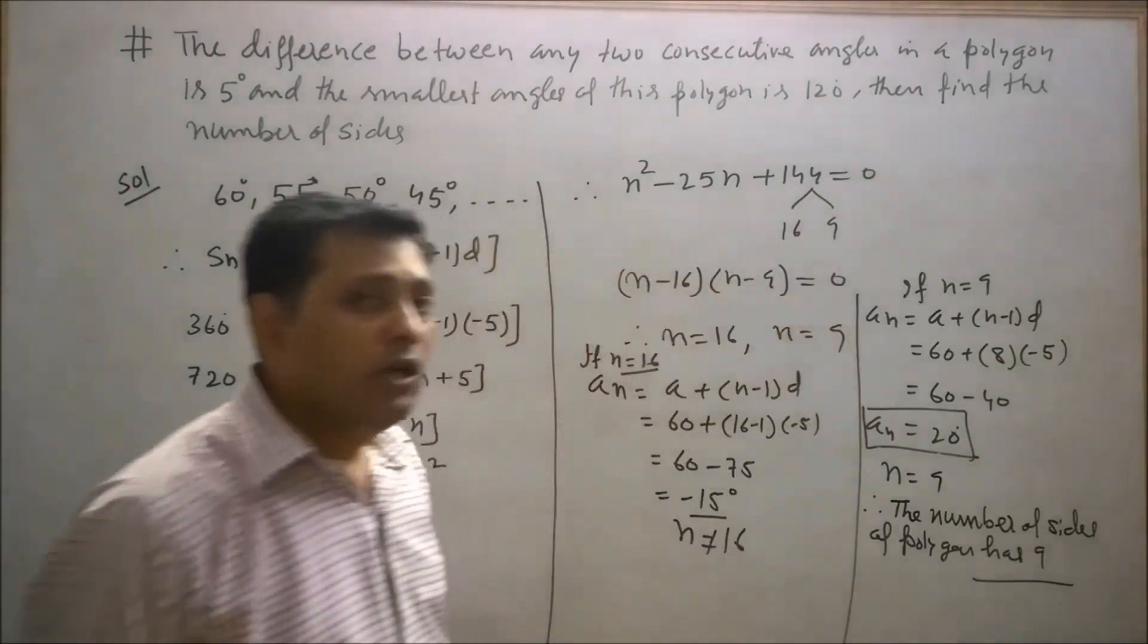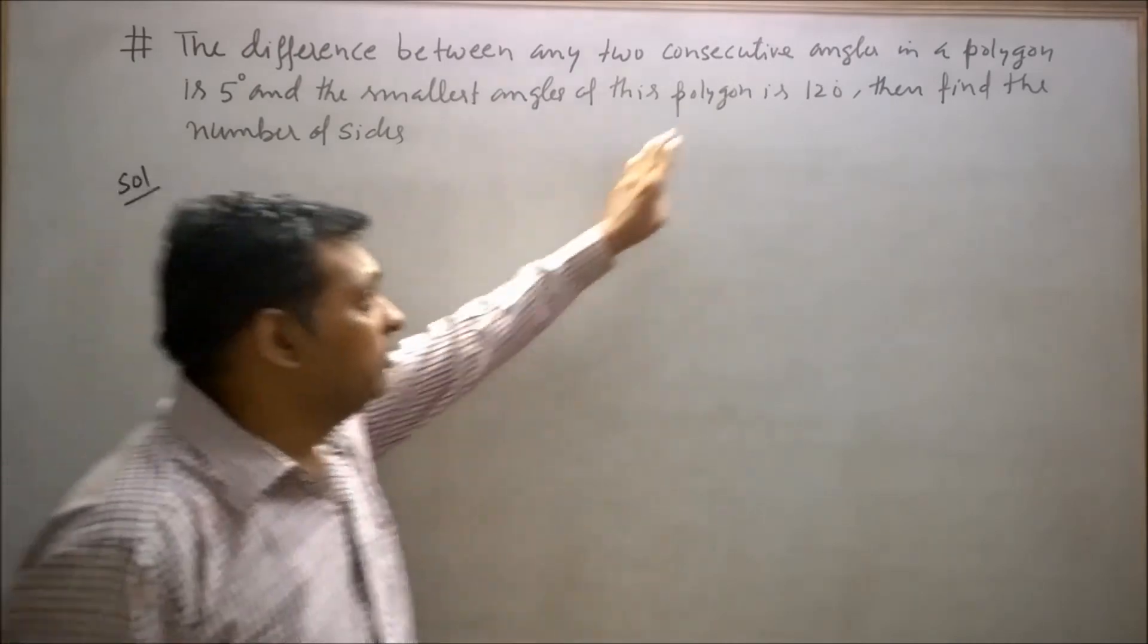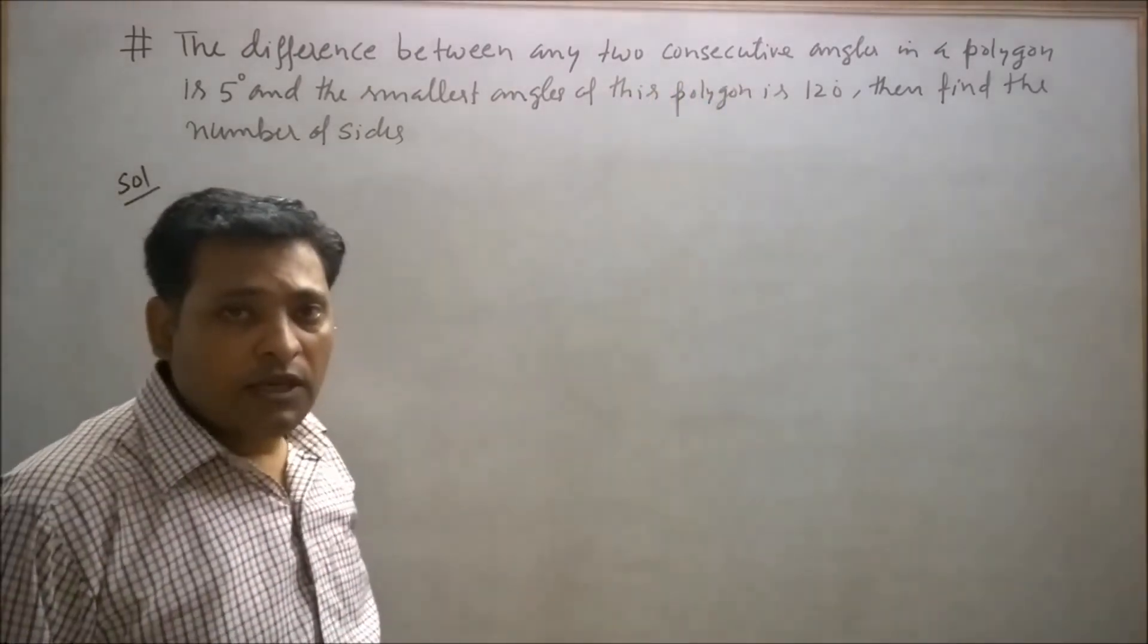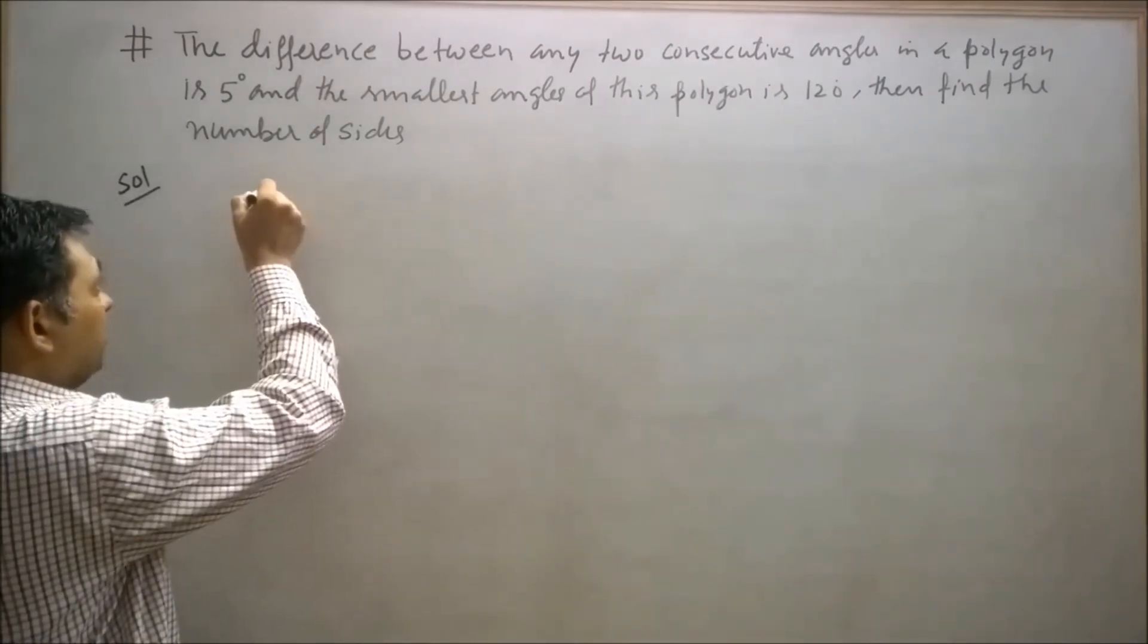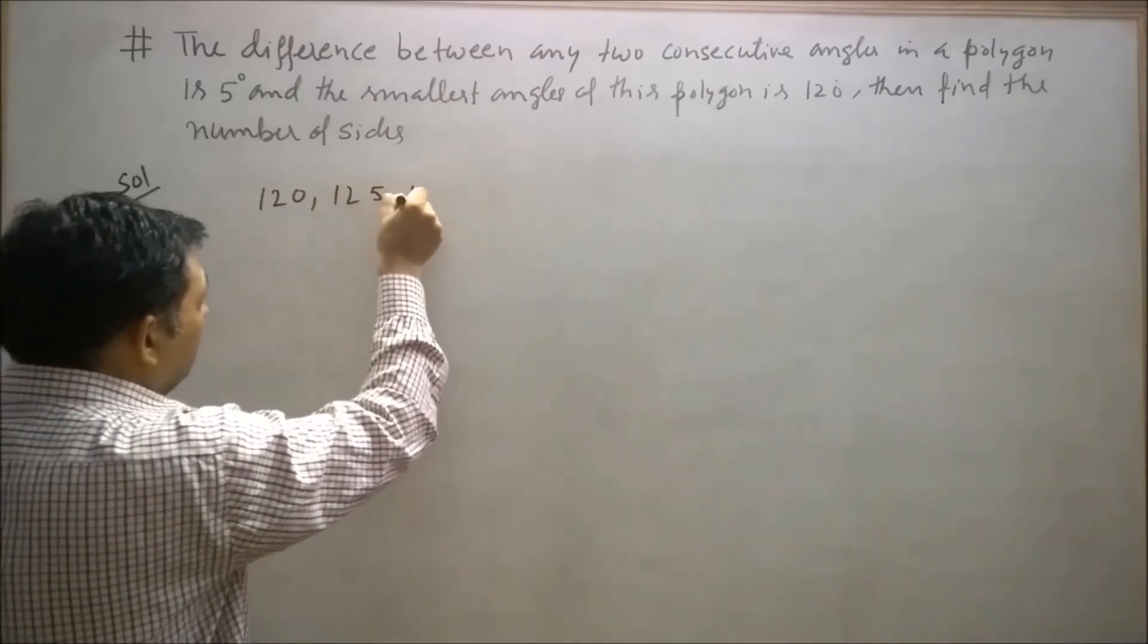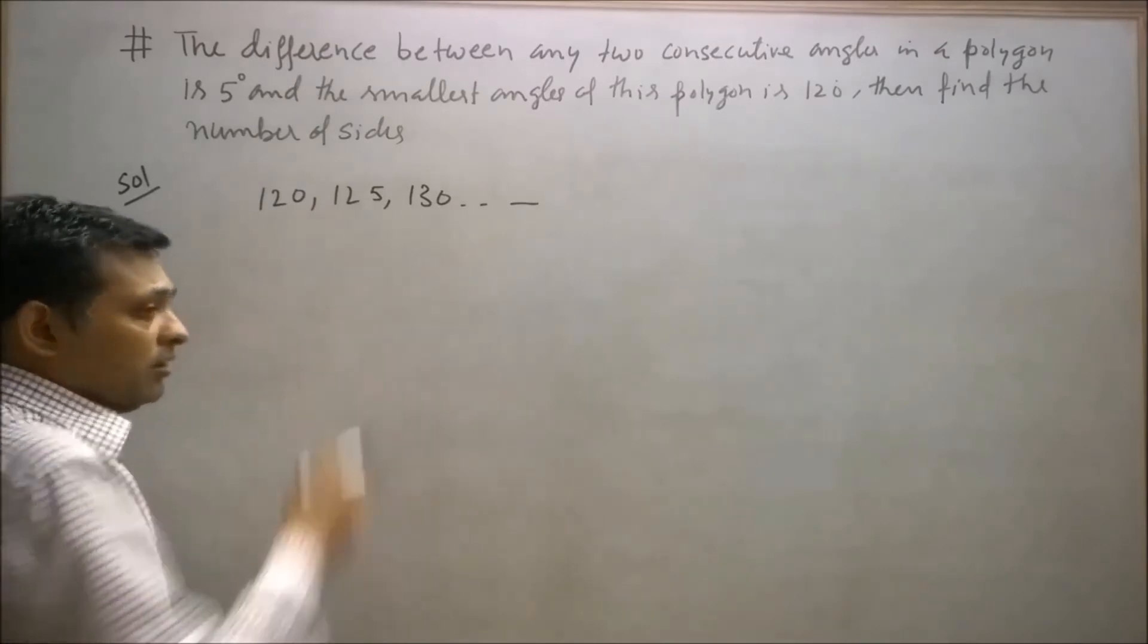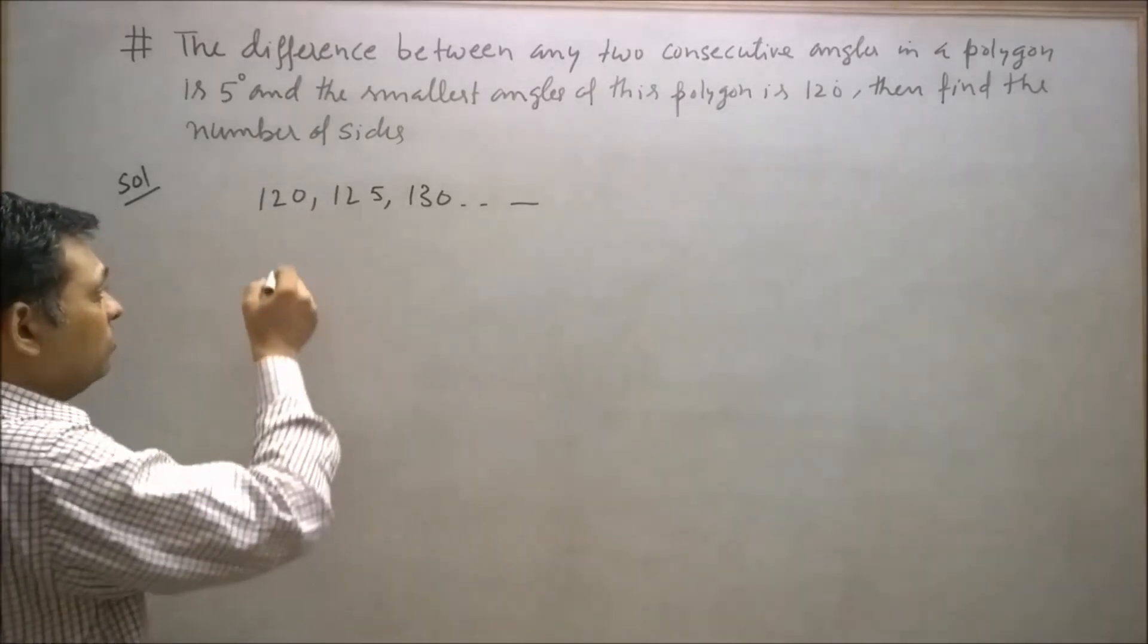Now I will try to solve this question using my second approach. It is given that the smallest angle is 120 and the difference between any two consecutive angles is 5. So the interior angles will be 120, 125, 130, and so on.